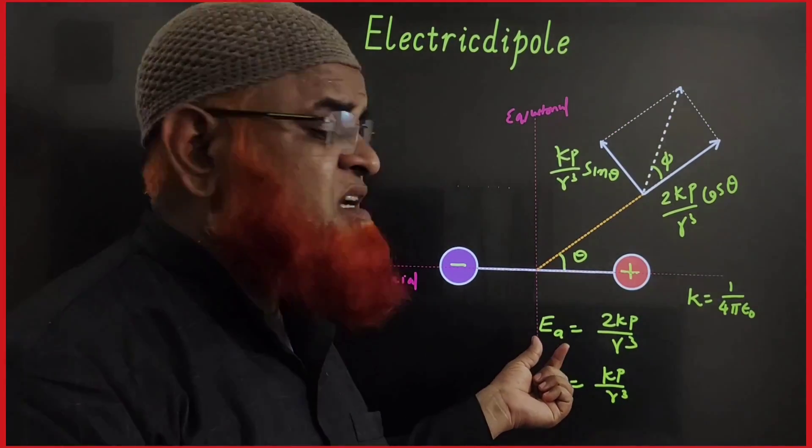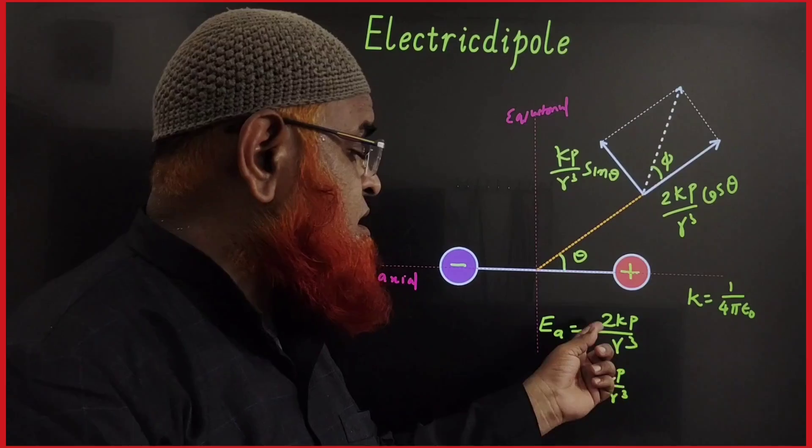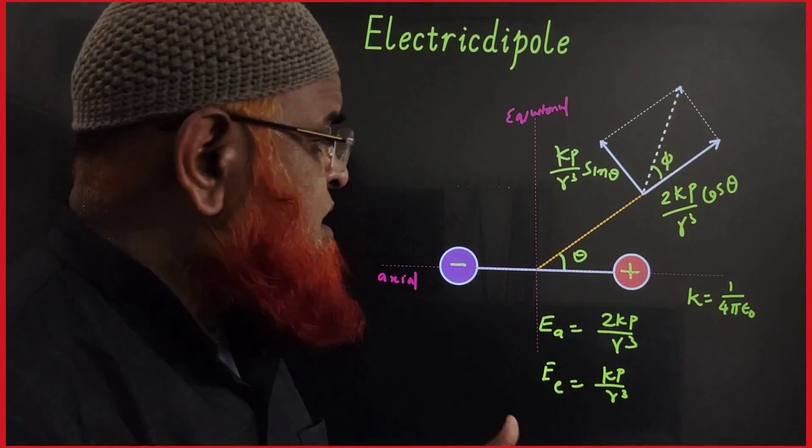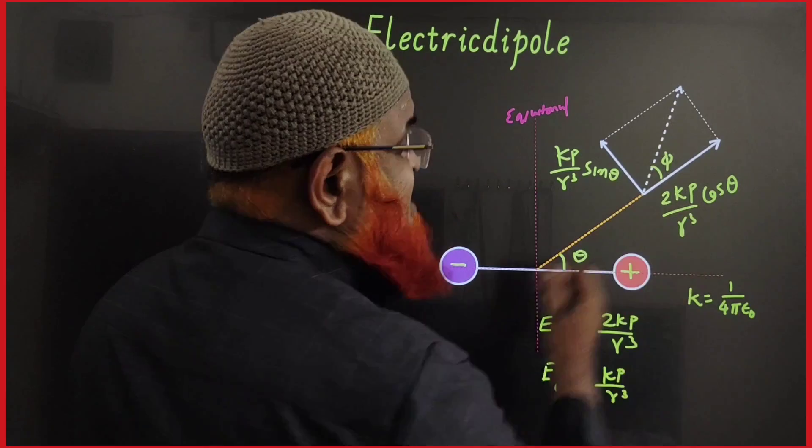You all know electric field intensity along the axial line is 2kp by r cube and along the equatorial line is kp by r cube. So with certain angle, if you take, you have to take the components here.